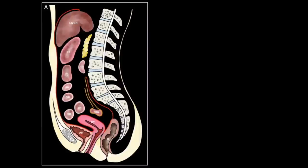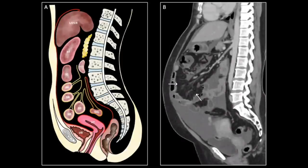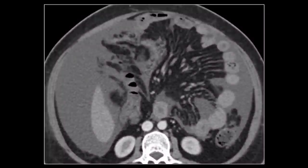Superiorly, the peritoneum suspends the small bowel loops via the mesentery marked in yellow. On sagittal CT images, the mesentery can be easily identified as the fan-shaped fat density membrane that contains the superior mesenteric artery shown by the hollow arrow. On an axial section, the mesentery can be identified posterior to the small bowel with ascites accumulating along the anti-mesentery border. The mesentery is involved in multiple diseases ranging from inflammatory to neoplastic etiologies.